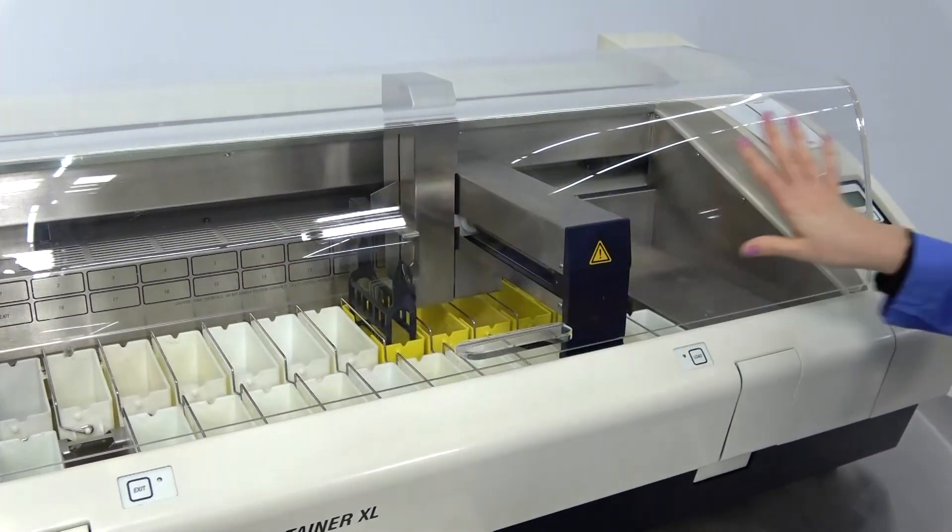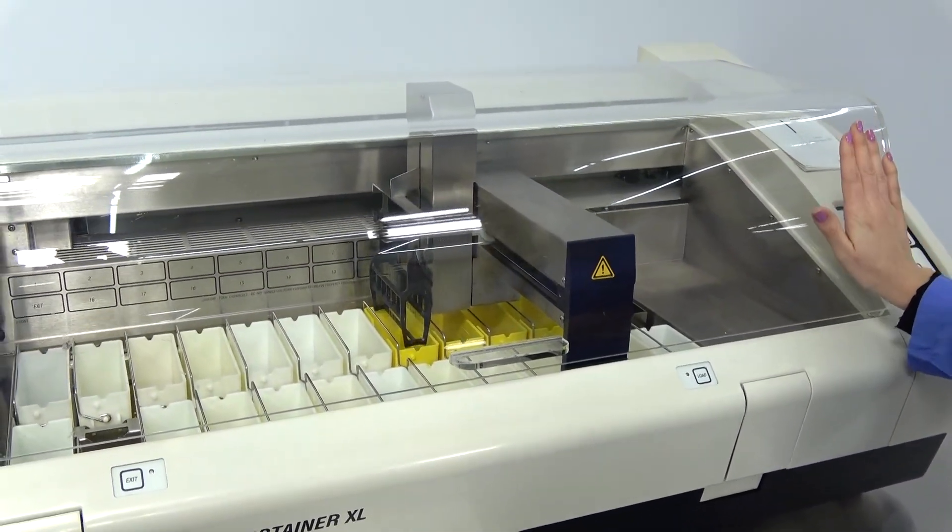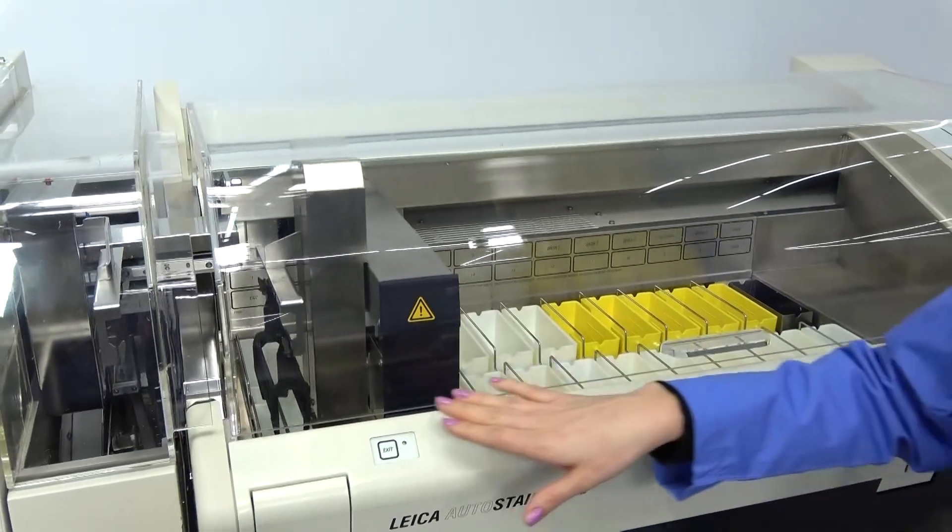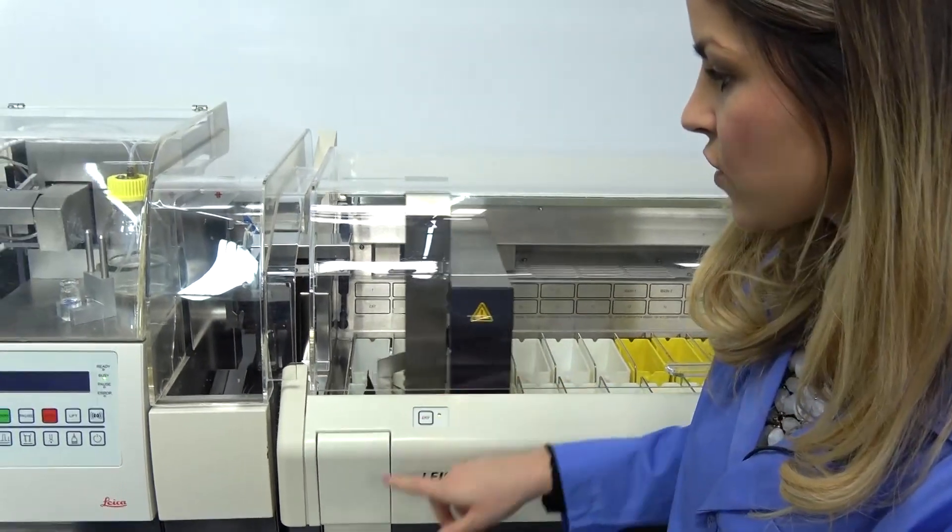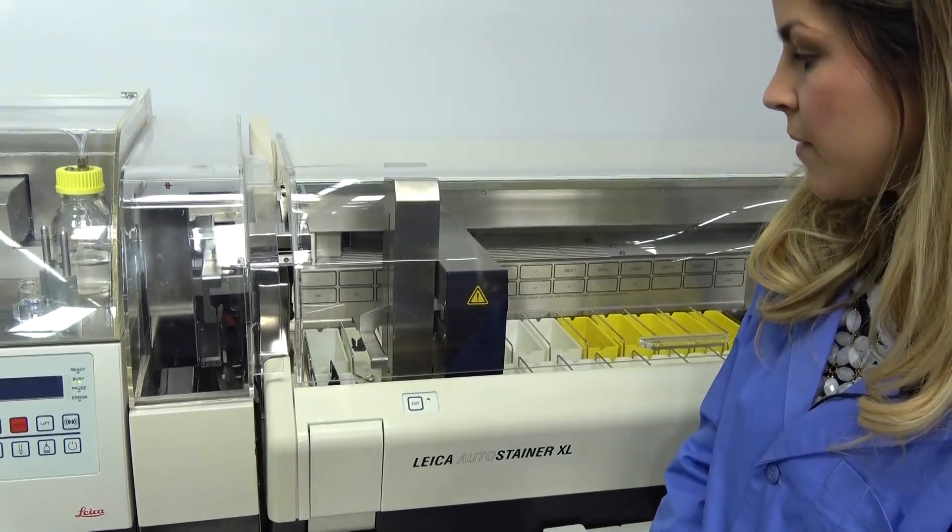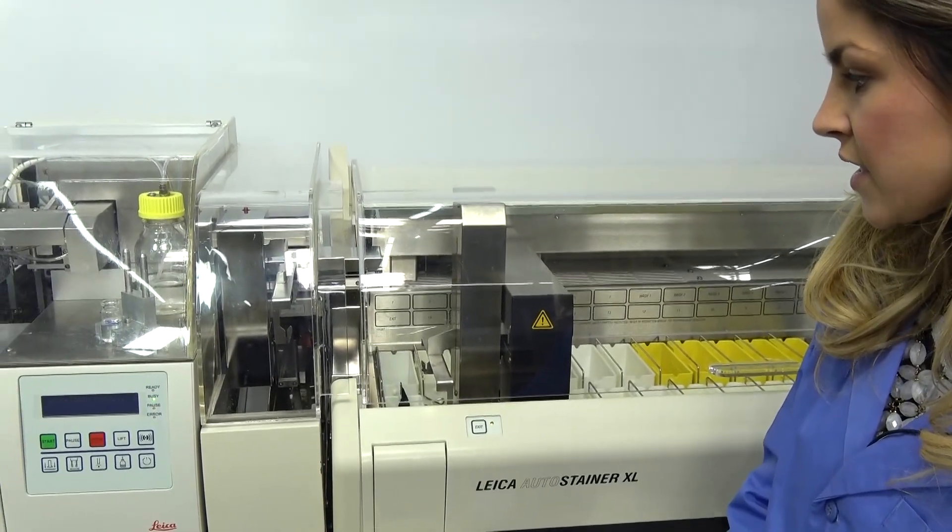There's no visible scratching on the outside of this hood either. It's going to drop the basket at the exit position here, and when it does that, it's going to initialize the cover slipper to pick up the basket and start the cover slipping application.